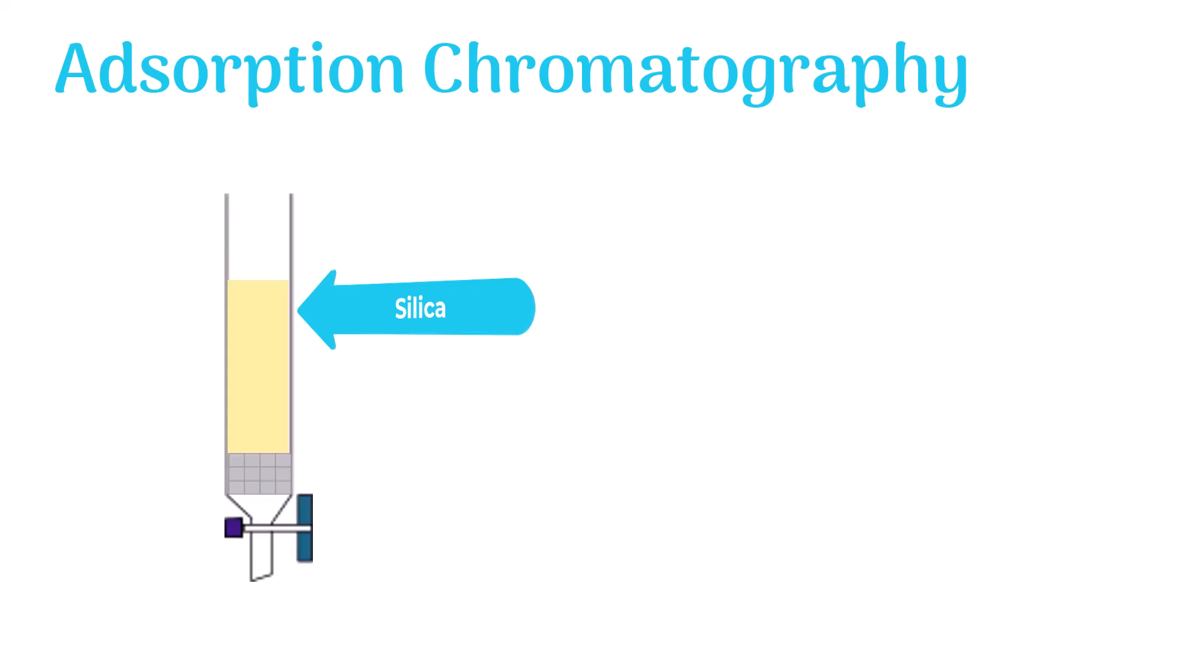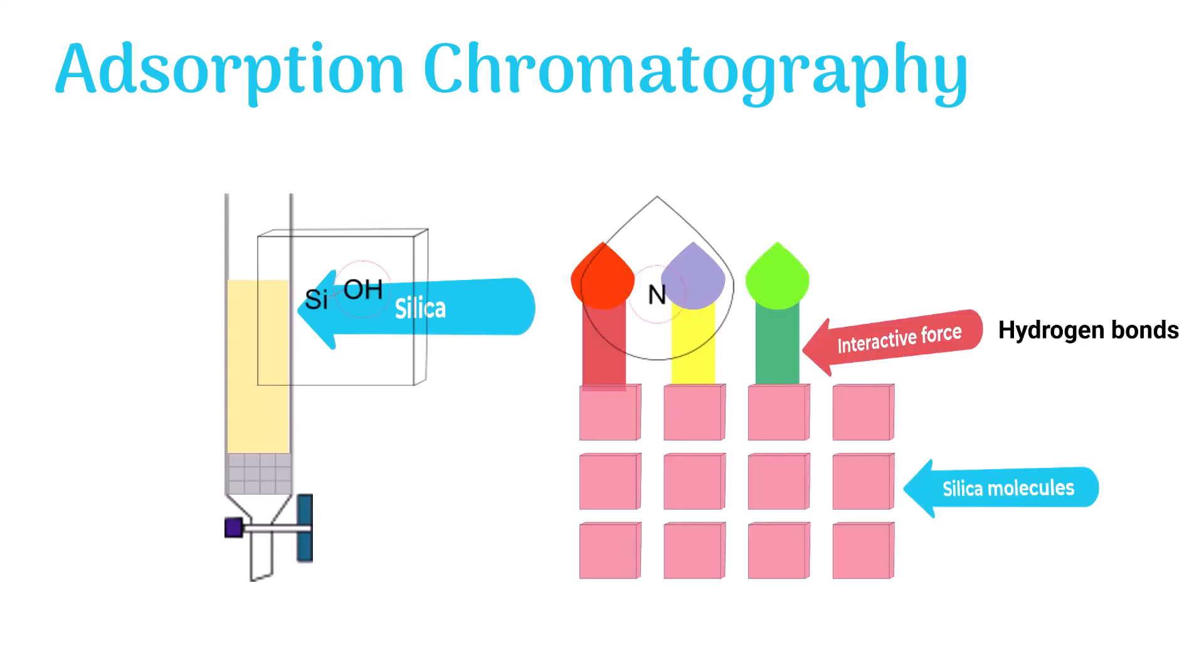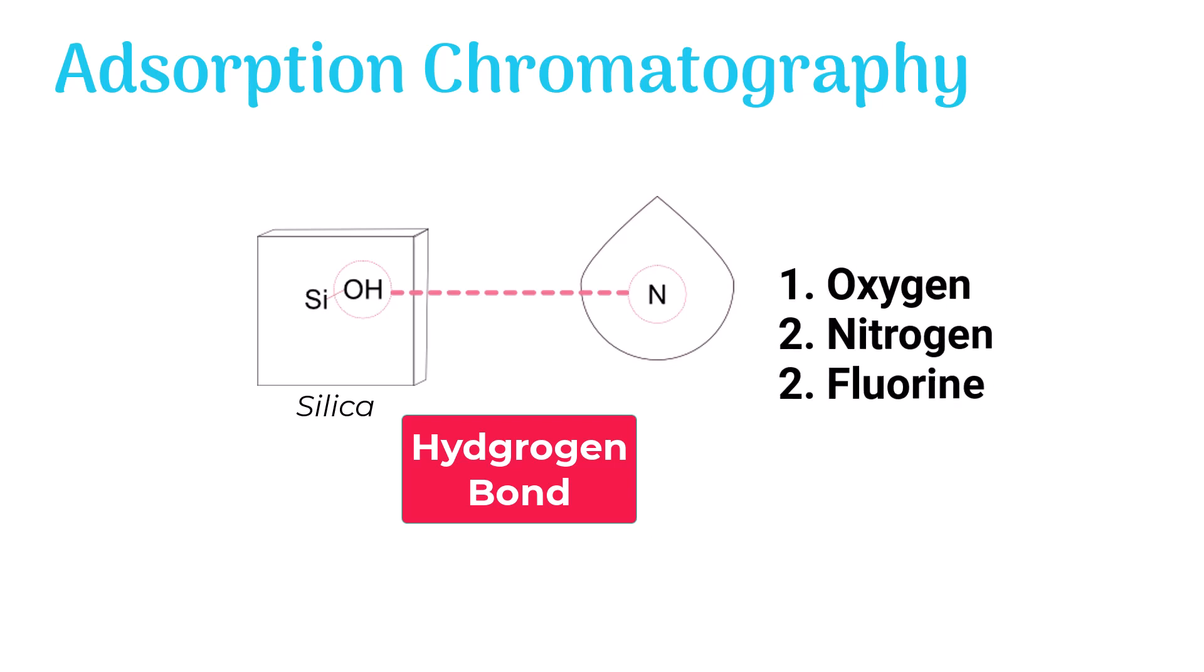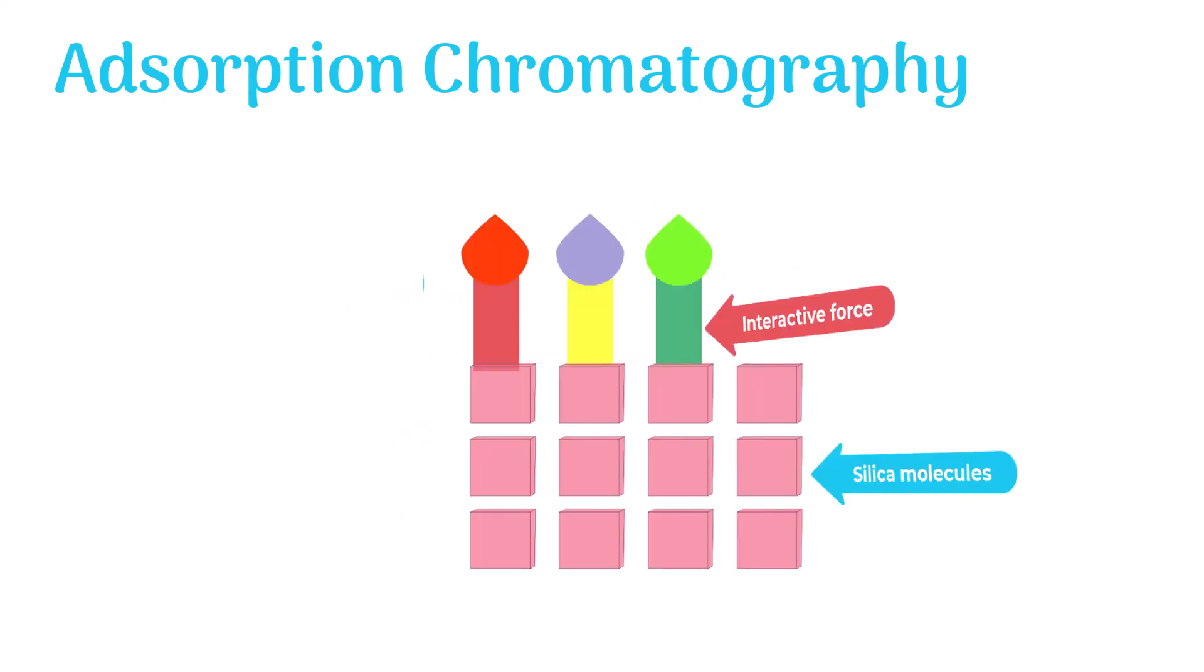In the case of silica, the attractive forces are hydrogen bonds. Hydrogen bond forms when the O-H group of silica attracts the electronegative atom of another molecule. The electronegative atom could be oxygen, nitrogen, fluorine, etc. The strength of attraction between the adsorbent molecule and the sample molecule could be different.